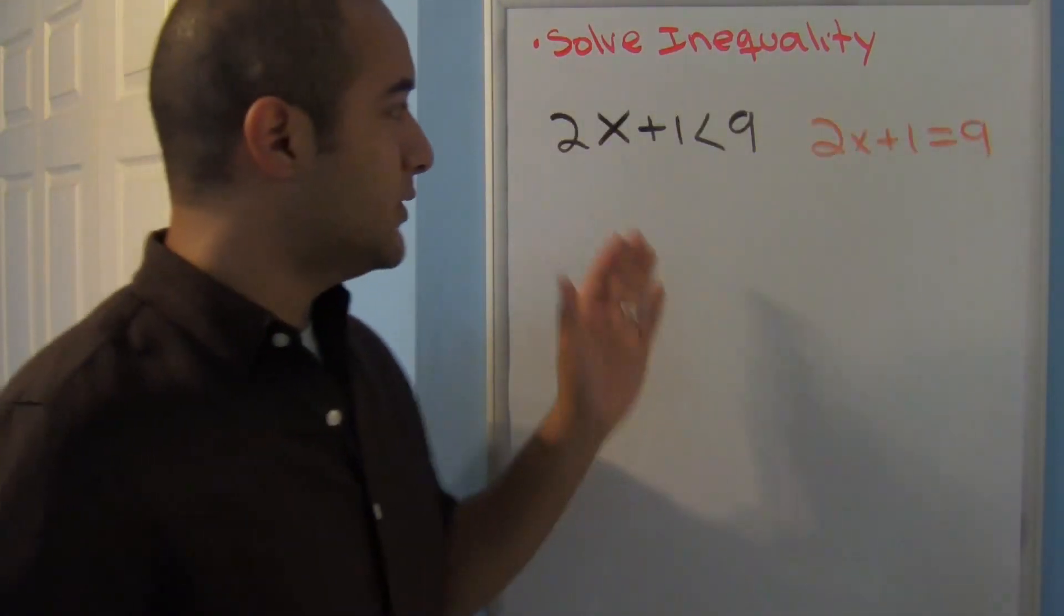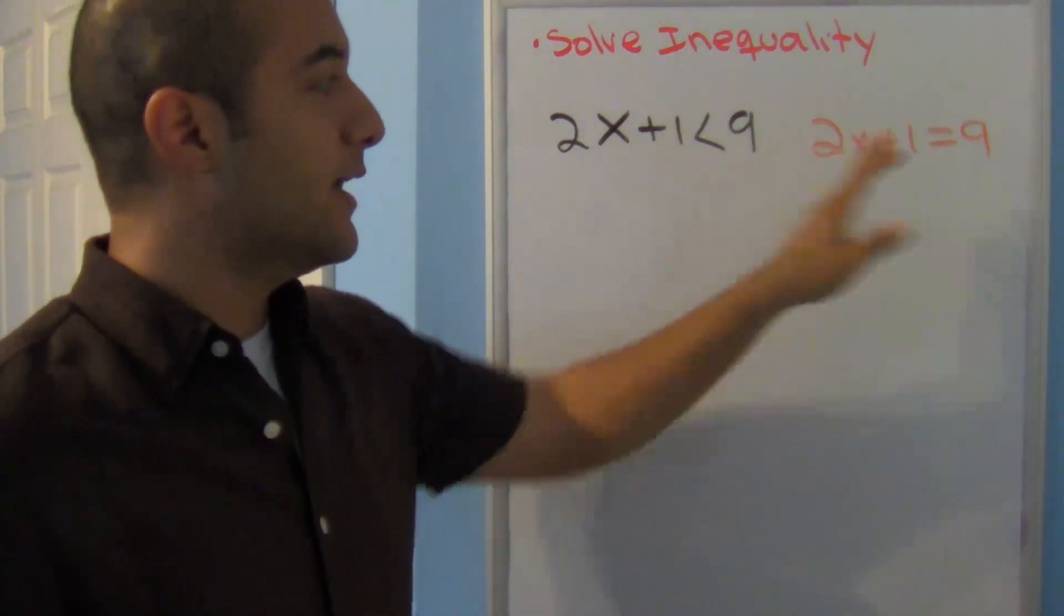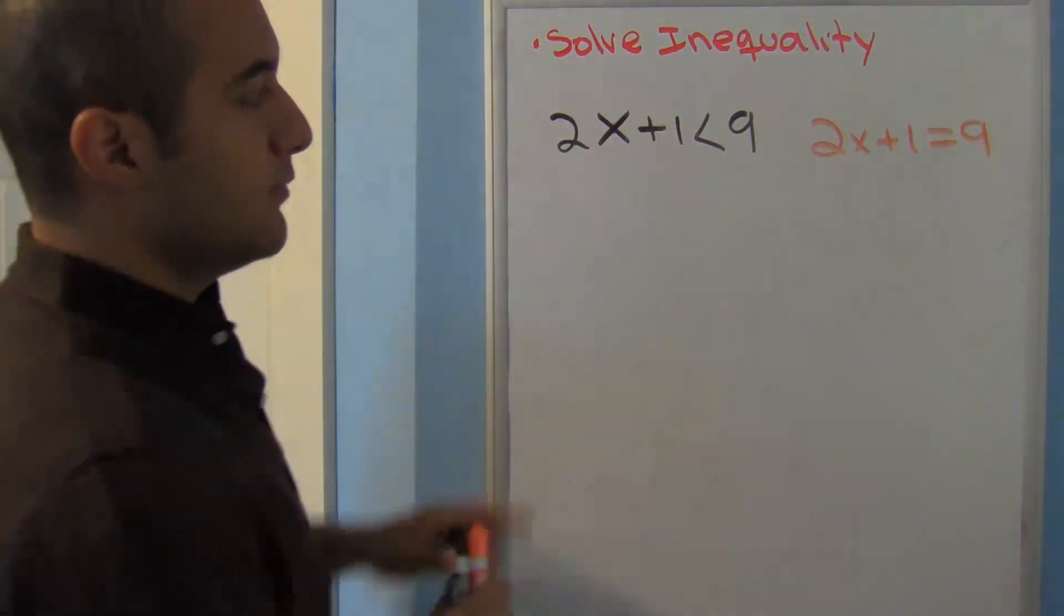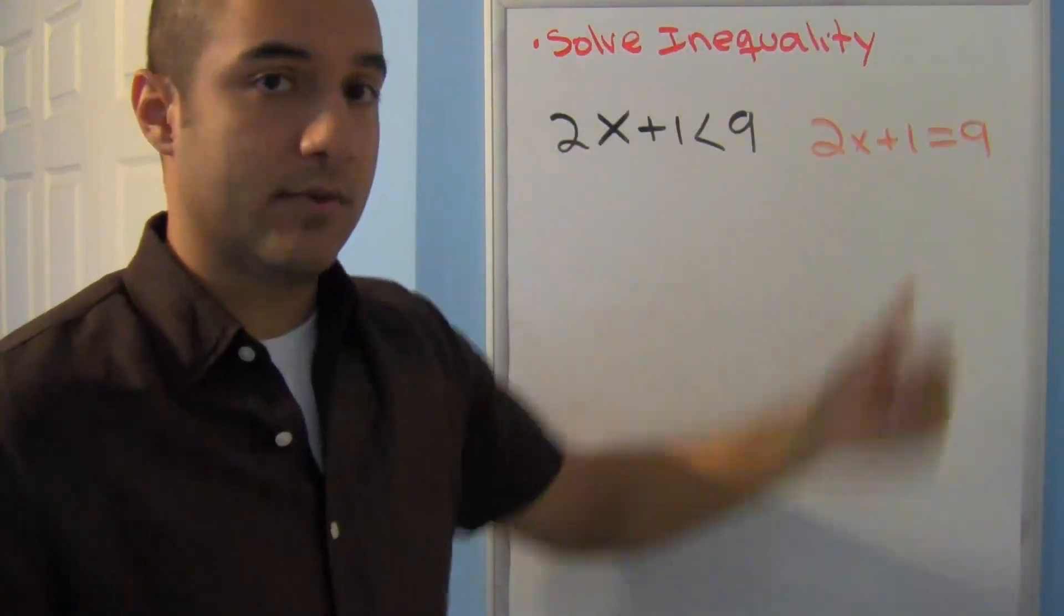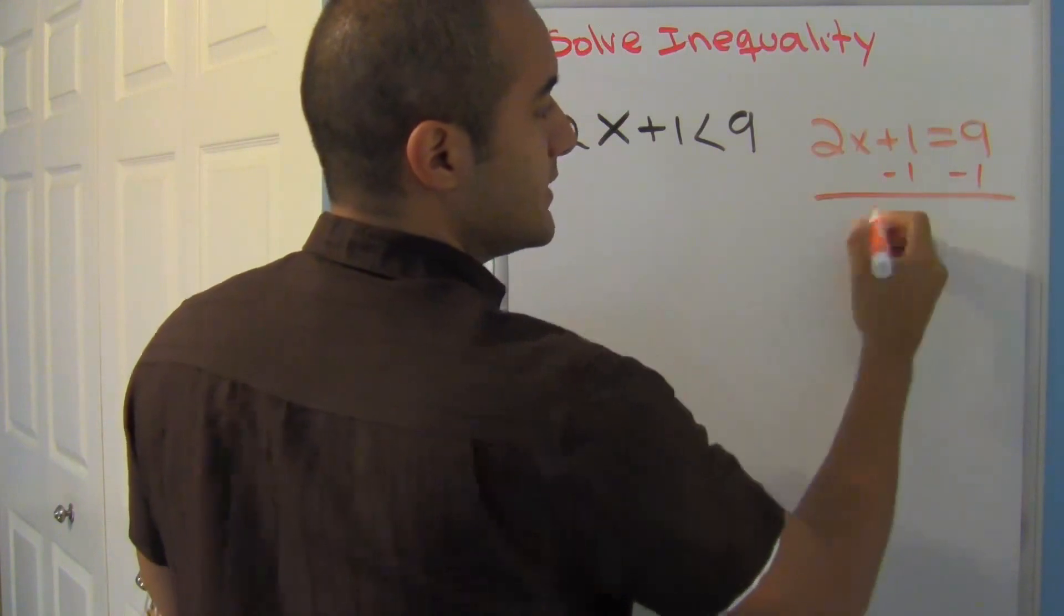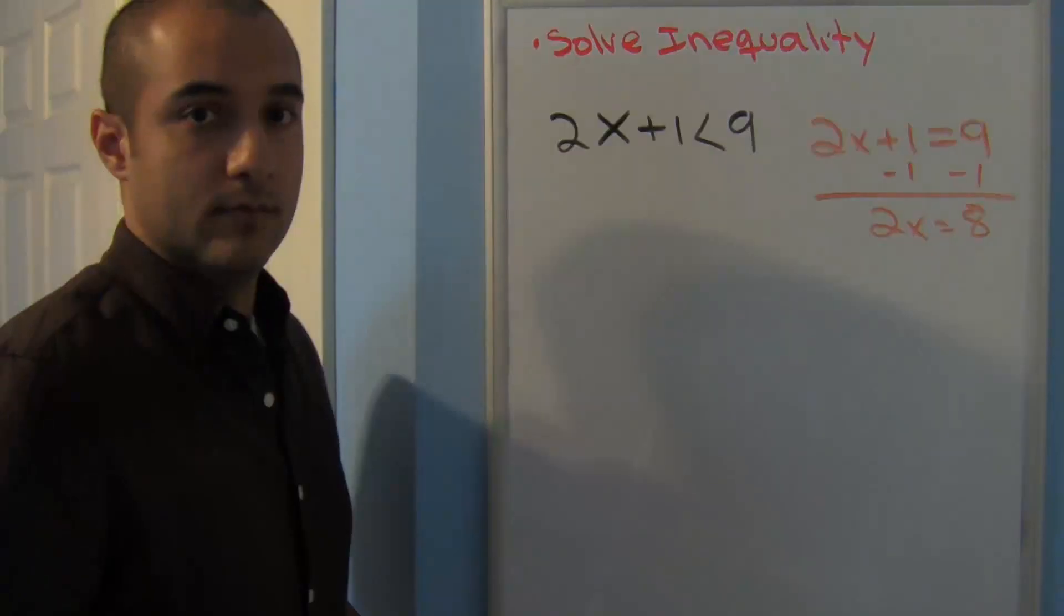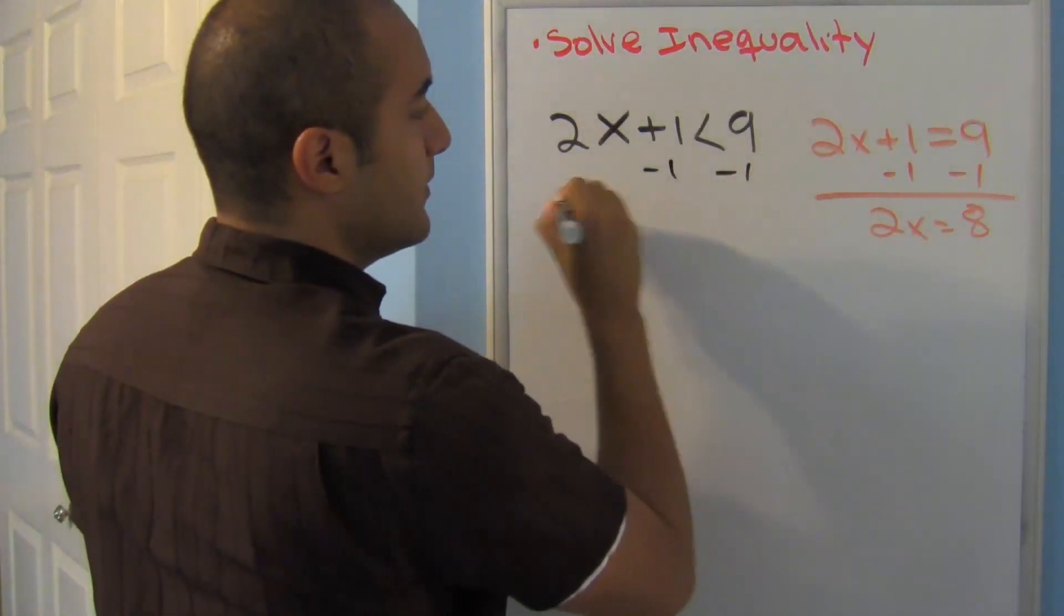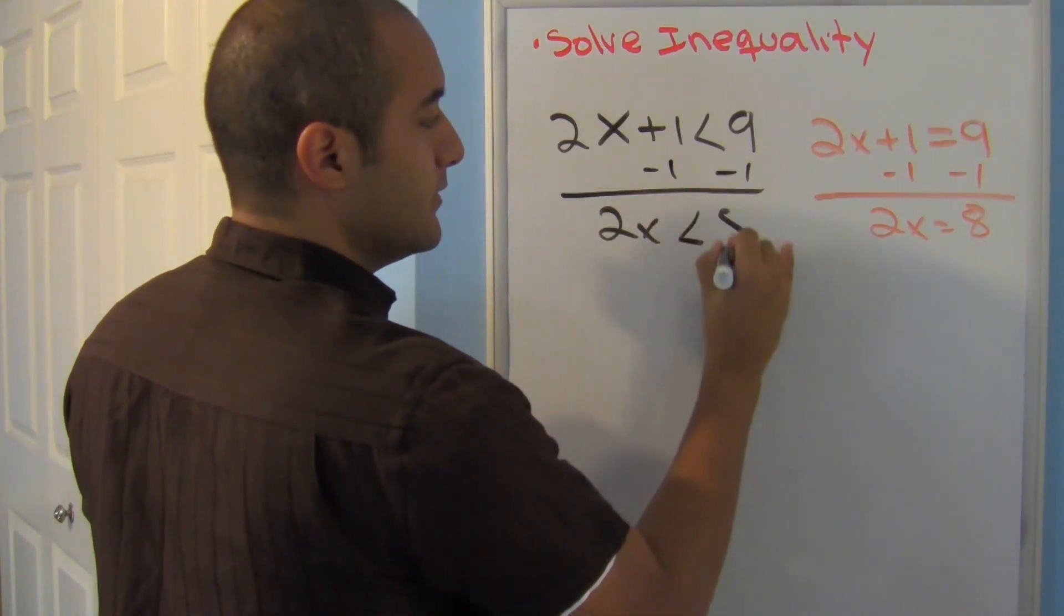All right, what about when you start looking like this? Well remember, if you get stuck, in your head just go ahead and think of it as an equal sign. Now here, remember you always save this term for last, the one that has your x, so I'll get rid of that one. Here I would subtract 1 from both sides and I would get 2x equals 8. I'll do the same here. I'll subtract 1 from both sides and I get 2x is less than 8.